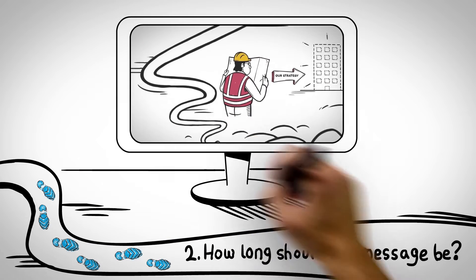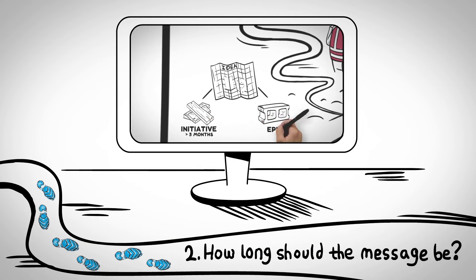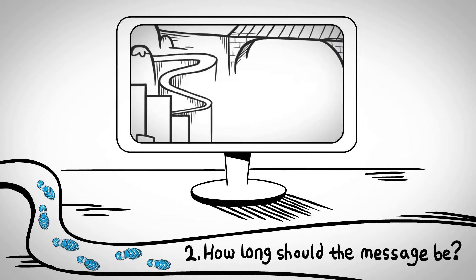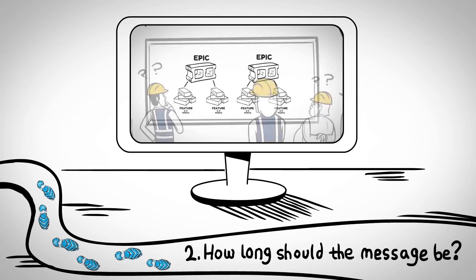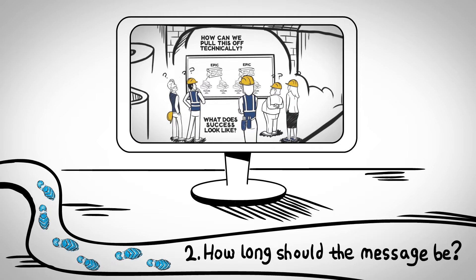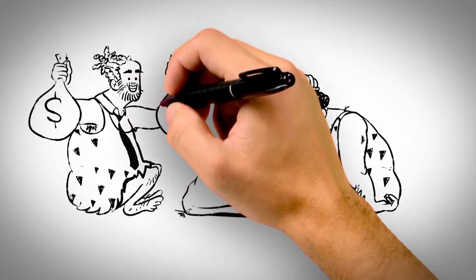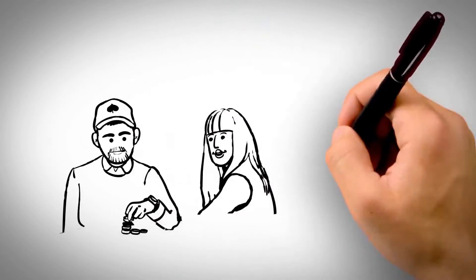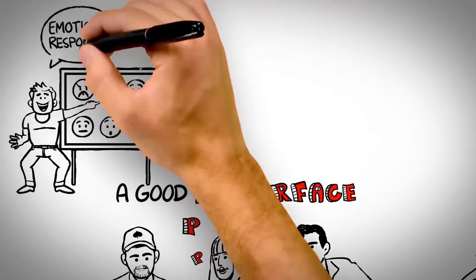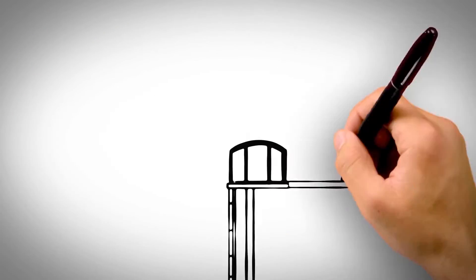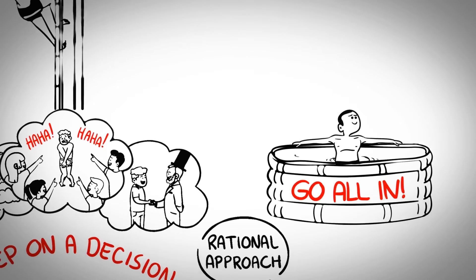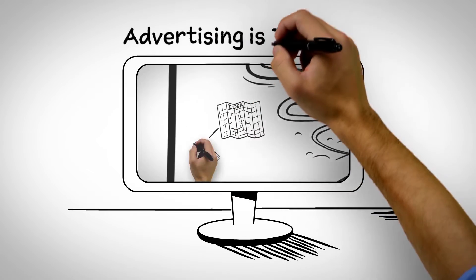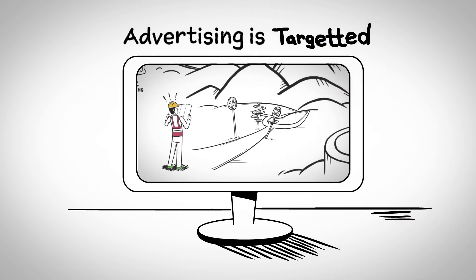Step 2: how long should the message be? When a whiteboard video is done right, a lot can be shared in a short span of time. Our studio can condense what you need to say into a 90-second to 2-minute window. A little fact: 130 words can be comfortably spoken in a minute. The majority of our viewers watch a full two minutes because our whiteboard videos take the viewer on a journey — a simple through line that's easy to follow — and ask the dramatic question: what will happen next?